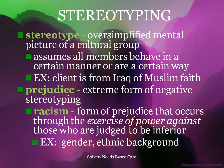Stereotyping is defined as oversimplifying the mental picture of a cultural group — assuming that all members of a certain group behave in a certain manner. For example, if you have a client from Iraq of Muslim faith, you cannot assume that they are terrorists. Not all people from Iraq of Muslim faith are terrorists. Prejudice is defined as an extreme form of negative stereotyping, and a form of prejudice is racism — which occurs through the exercise of power against those judged to be inferior. This isn't just based on ethnic backgrounds; we also see racism that's gender-based.